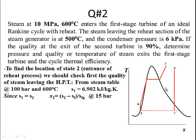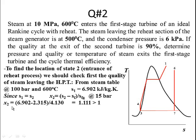State 2 requires two properties to be fully identified. The first property is entropy: since the expansion is isentropic, s1 = s2, and s1 is already found from the given pressure and temperature as 6.902 kJ/kg·K. The second property is pressure: P2 equals P6, which is 15 bar. Using these, we calculate the quality.